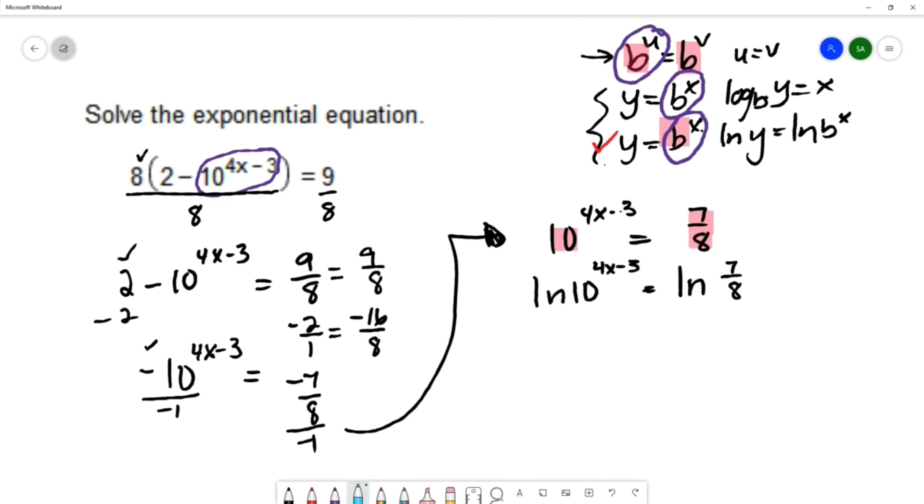Once we take the log of both sides, we have the log properties available. We'll use the power rule for logarithms, which allows us to take that power and make it the coefficient on the log. So we have 4x minus 3 multiplied by natural log 10 equals natural log of 7 eighths.